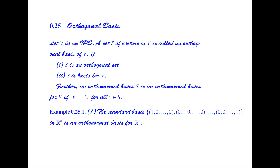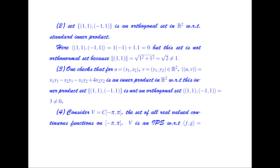For example, we have the standard basis in R^n: e_i is the vector with 1 in the ith place and 0 in all other positions. So e_1 has 1 as the first element with all others 0, e_2 has 1 as the second element with all others 0, and so on. This standard basis is an orthonormal basis for R^n.